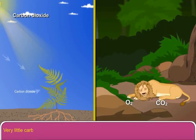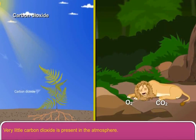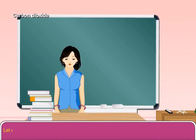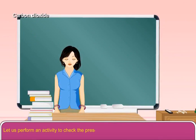Very little carbon dioxide is present in the atmosphere. All plants and animals give out carbon dioxide in the process of respiration. Let us perform an activity to check the presence of carbon dioxide in the air.